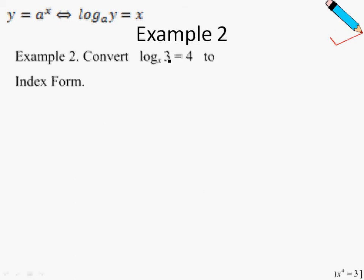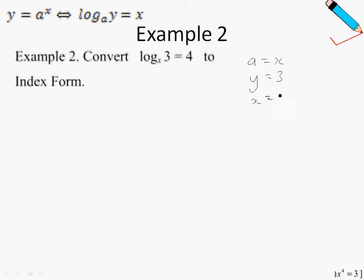Now we will learn how to convert from logarithmic form to index form. Once again, I am going to identify my a, my y, and my x. In this case, comparing the equation to the standard form, my a is x, my y is 3, and my x is 4. So to convert: y equals a to the power of x, meaning 3 equals x to the power of 4. You can also write it the other way around — that is also fine.